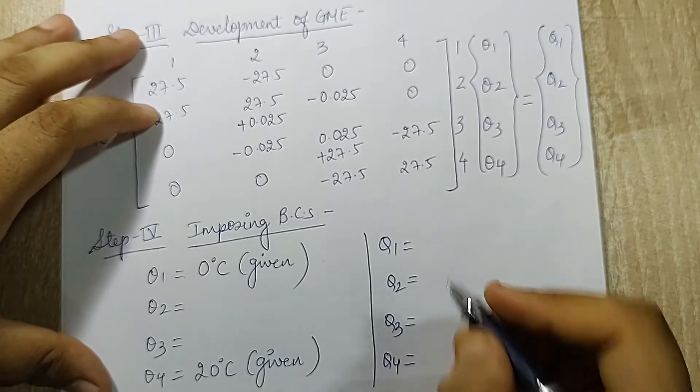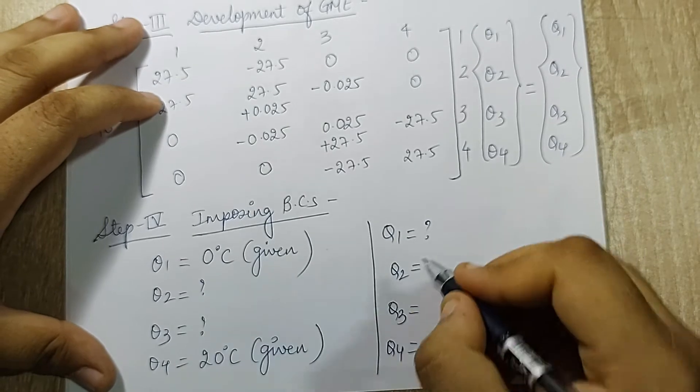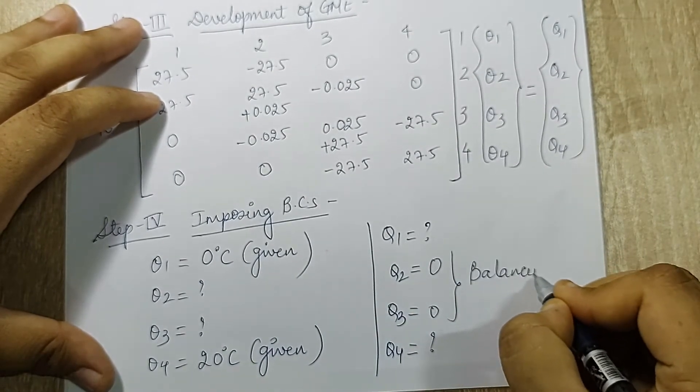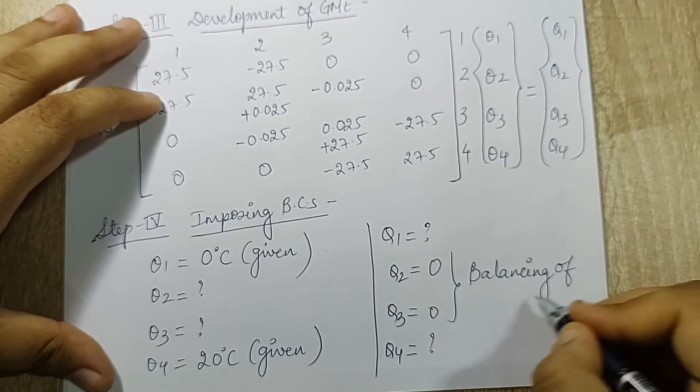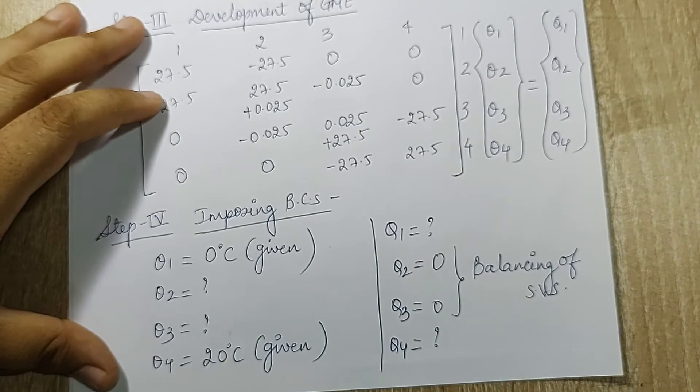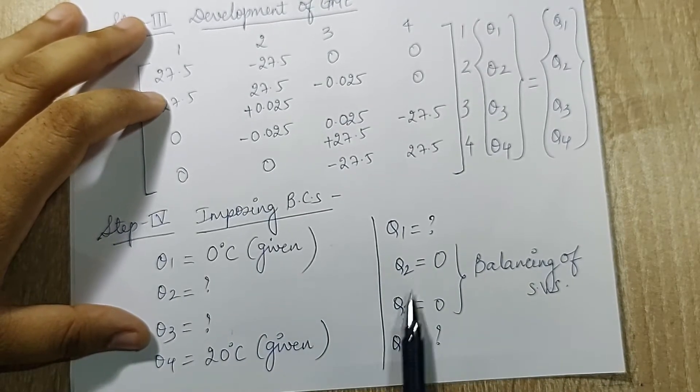Now since these two values are known, these two will become question marks. These two will become question marks and these two will be 0. This is balancing of secondary variables. You will anyways need to calculate the temperature interface temperatures.